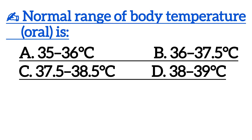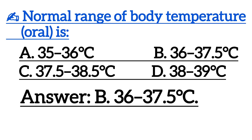The normal range of body temperature is — correct answer is option B: 36 to 37.5 degrees Celsius.